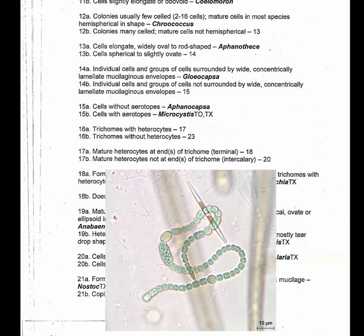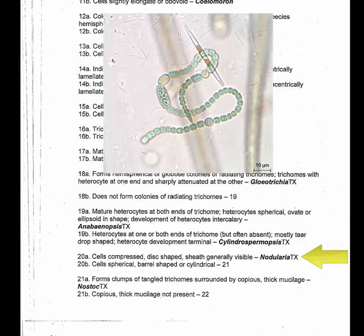At 20A: cells compressed, disc-shaped, sheath generally visible. It's a little hard to see whether we have a sheath — we have a very small sheath on these. The cells are not compressed or disc-shaped; they're more round. Disc shape would be like Limbia where they were really compact and much longer than wide. In the case of Nodularia, it would literally be like you take an exercise ball, sit on it, and it becomes more oblong than high — kind of squished. So we go down to 20B: cells spherical, barrel-shaped, or cylindrical — and that's what they are, cylindrical, possibly slightly barrel-shaped as well.